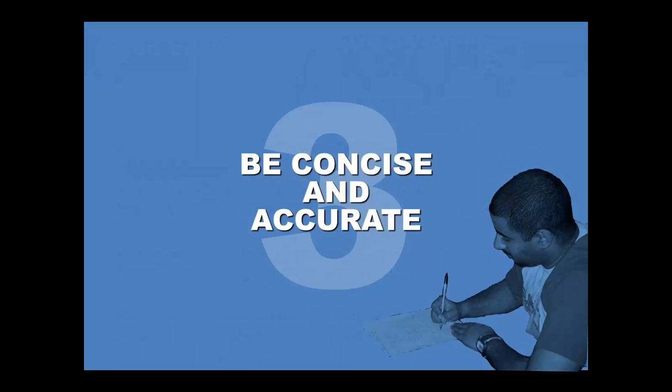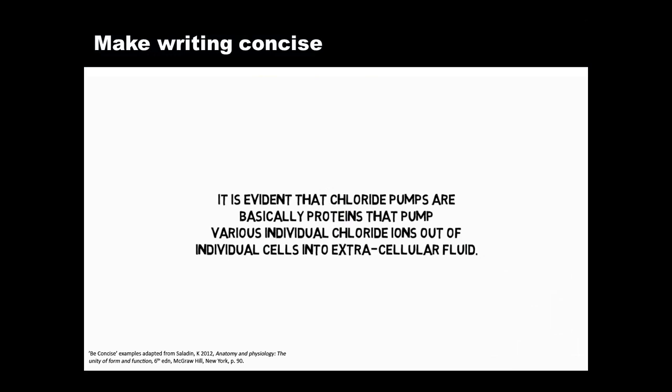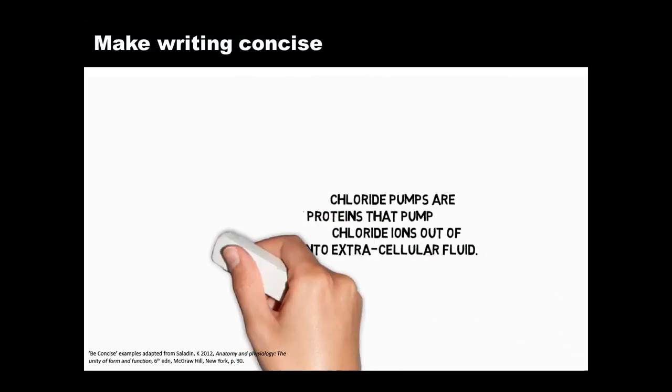We'll start by looking at some sentences that aren't concise. As you read each one, think about how to trim words and tighten expression. Remember, you can pause the video if you need to. Here's the first example. It begins with, it's evident that. Get rid of this slow wind-up, and any other vague words, to make the sentence tighter and clearer.